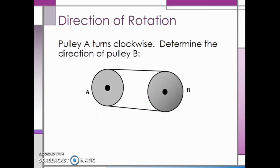In this example, we have pulley A turning clockwise. Since we have an open type pulley, both shafts have to rotate in the same direction. This means that pulley B will also rotate clockwise.